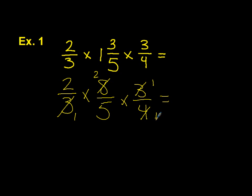So two times two times one is four, and then one times five times one is five. Our final answer is four-fifths.